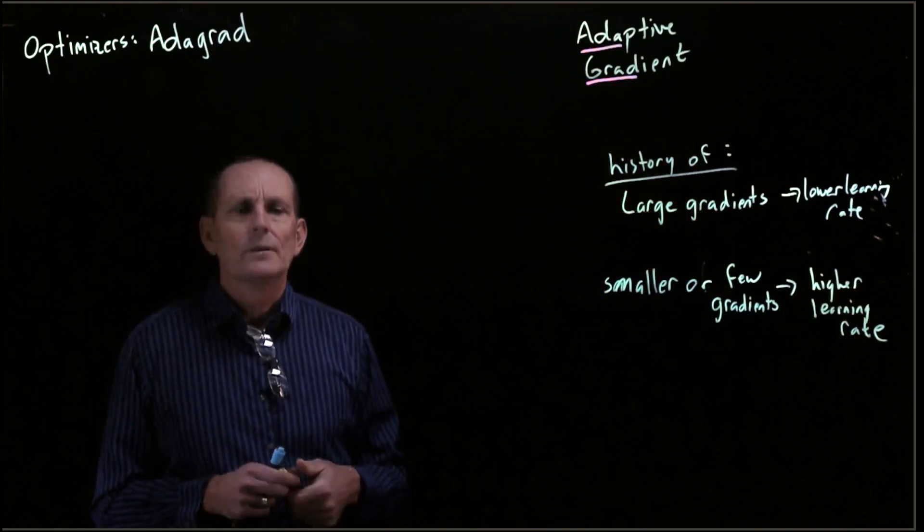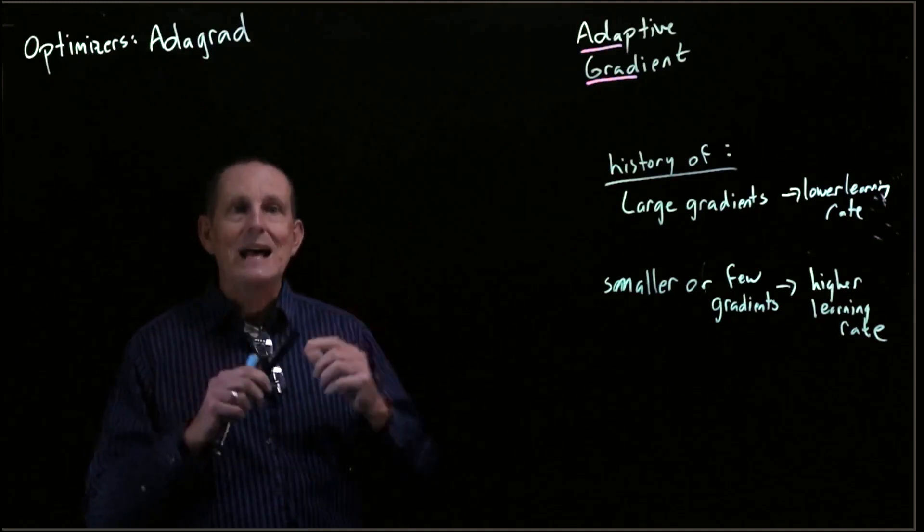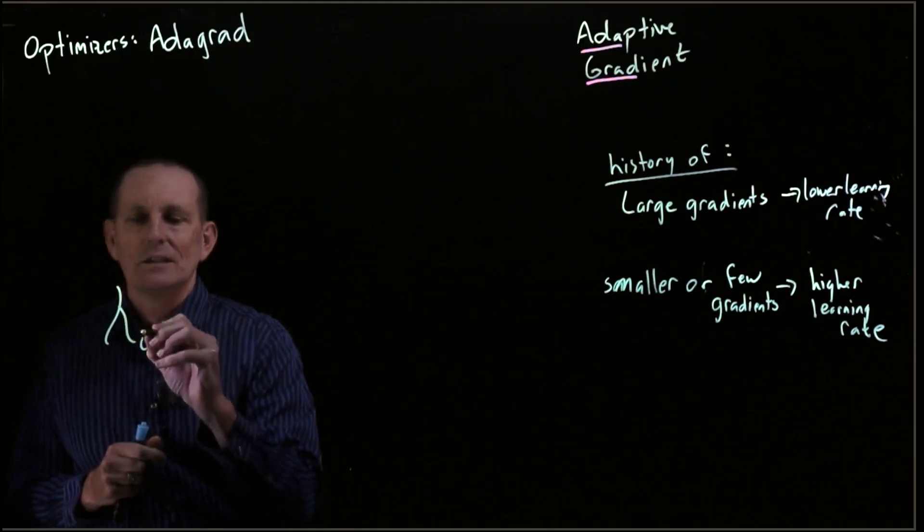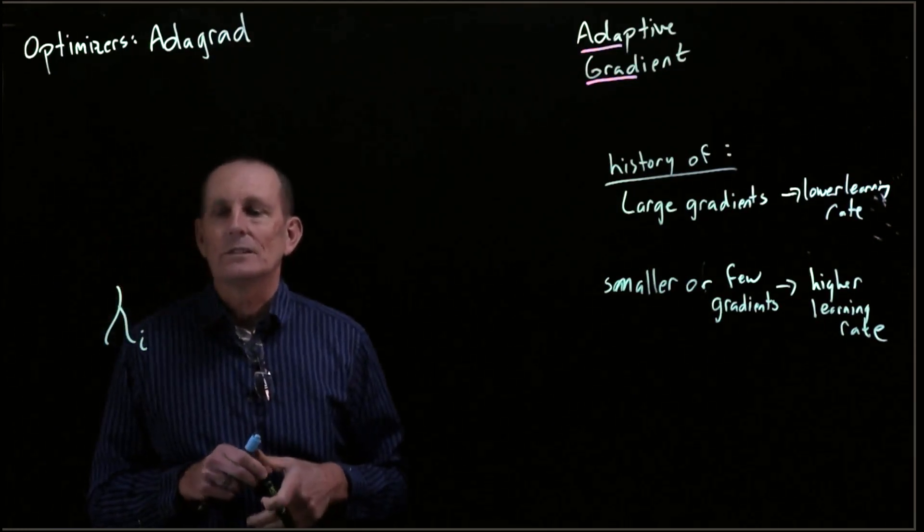What are we going to do? We're going to have some sort of master learning rate, and then we're going to have a specific learning rate for each parameter.